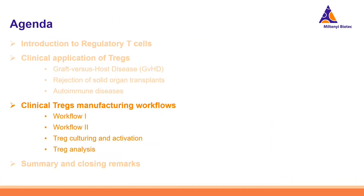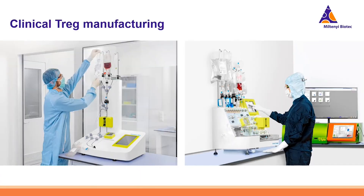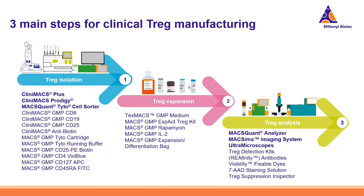Now let's jump to the exciting part and look at different workflows we can offer to manufacture clinical T-regs. T-reg manufacturing is basically composed of three steps: first the isolation of the T-regs, then an expansion phase to get meaningful numbers for treatment, and then analysis of the cellular product.